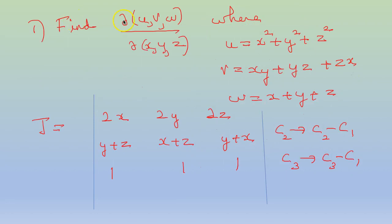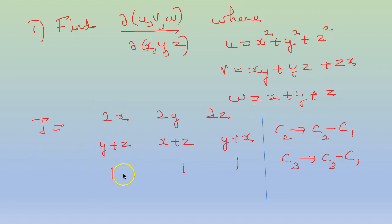Coming to problems. Find the Jacobian of u, v, w with respect to x, y, z, where u is x squared plus y squared plus z squared, v is xy plus yz plus zx, and w is x plus y plus z. So the Jacobian will be: the first column is partial derivative with respect to x. So del u by del x is 2x, del v by del x will be y plus z, and del w by del x will be 1.